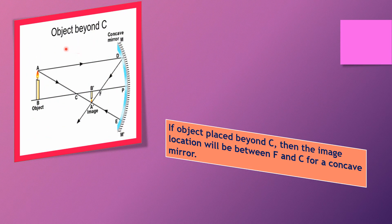Case two is when the object is placed beyond C, that means beyond the center of curvature. If the object is placed beyond C, then the image location will be between F and C for a concave mirror.